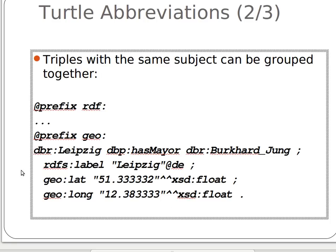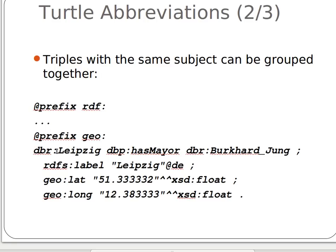Notice we've removed the subjects but have a semicolon between triples, to indicate that the subject of these triples is the same as the subject of the first triple — which is 'dbr:Leipzig'. That's just a way of abbreviating and grouping things together.